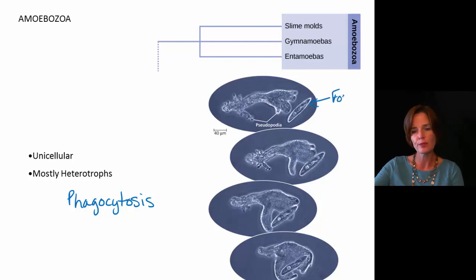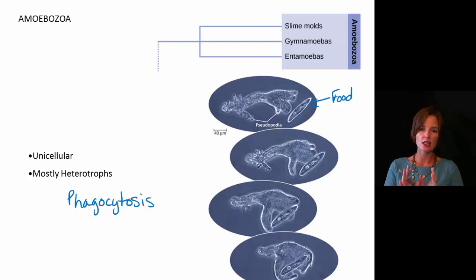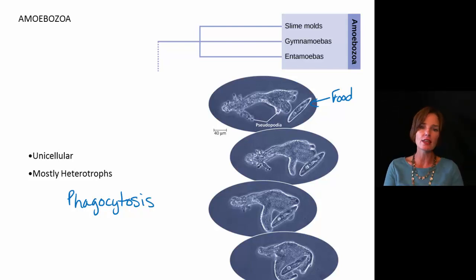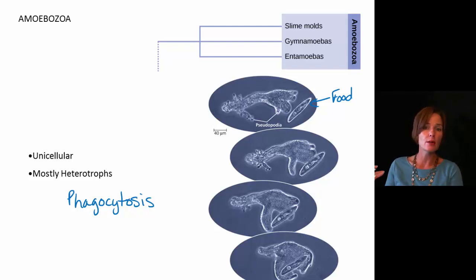Notice how the amoeba takes its pseudopods and wraps around, actually engulfing that cell so that it brings it entirely inside of itself. At that point it can digest it and obtain the nutrients from it. That would be the typical way that organisms in the amoebozoa group are going to be feeding.